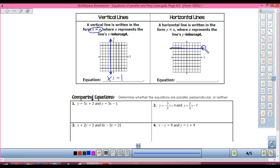Okay, if I have a vertical line, it is x equals a number. What's my slope of this line? Undefined. My equation is x equals negative 1.